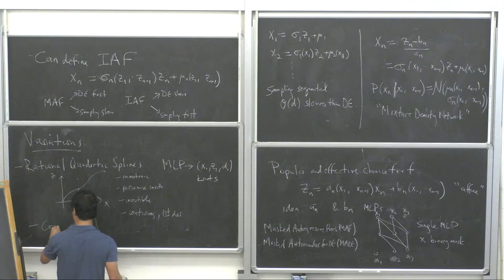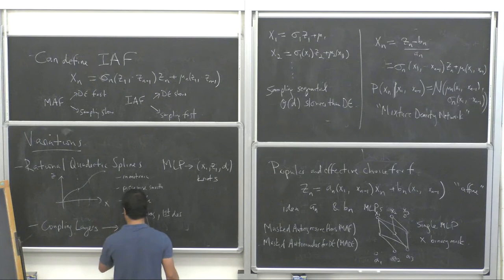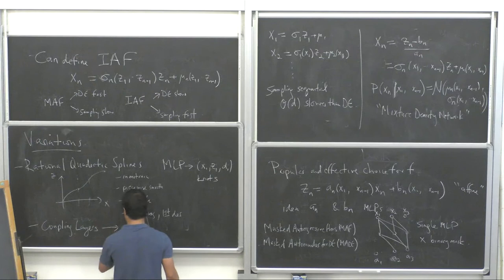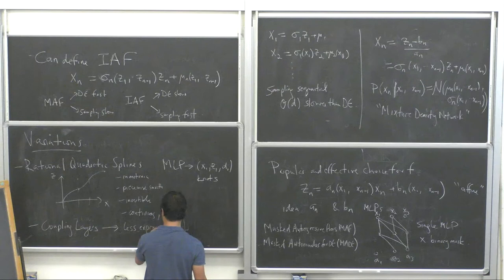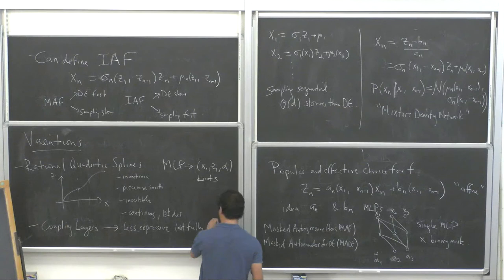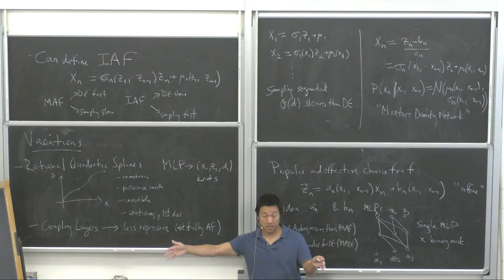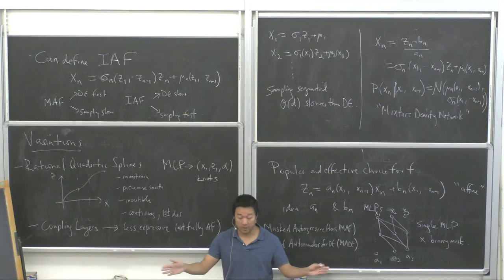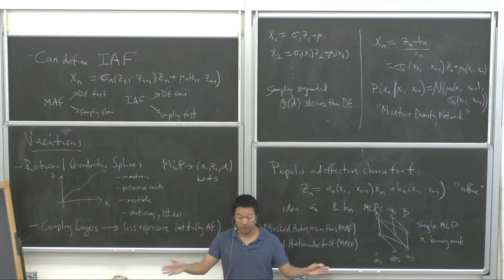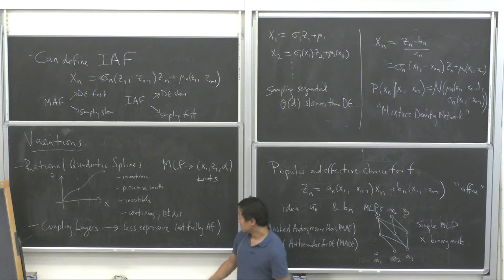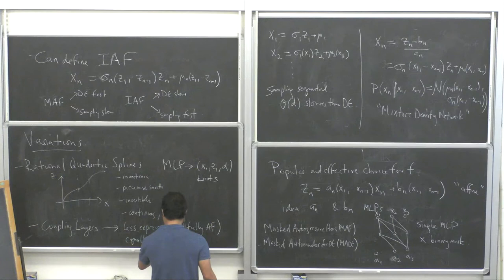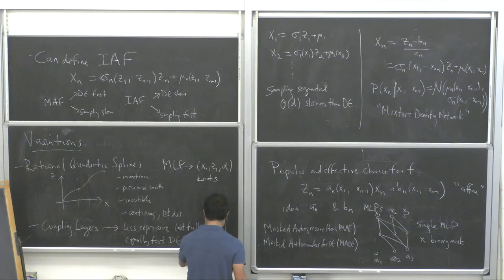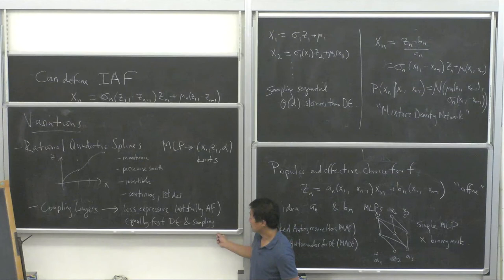There's another variation called coupling layers — these are less expressive, not fully autoregressive. They divide the feature vector into two parts and condition one part on the other. It's a very special case of autoregressive, but it offers equally fast density estimation and sampling. So there's a tradeoff between expressivity and speed.